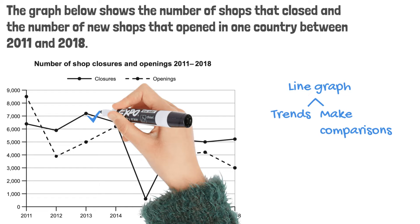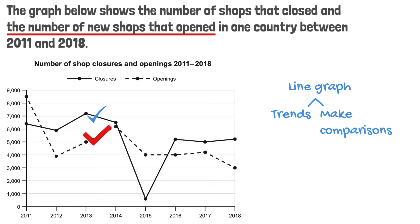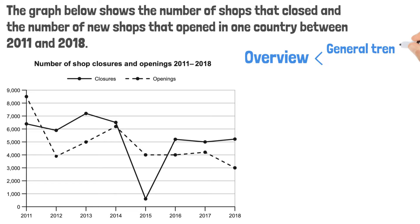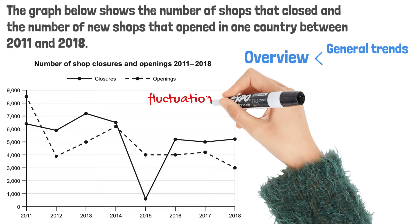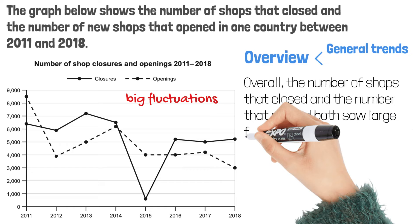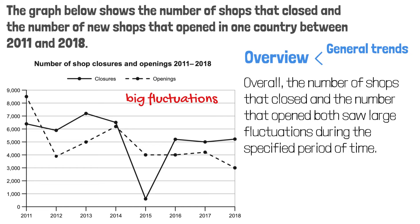This line shows the number of shops that opened, and this one shows the number of shops that closed. Let's start with the overview paragraph. For a line graph, of course, we will describe the general trends. Please don't say something like 'overall, they both declined.' I wouldn't call these downward trends. Obviously, they fluctuated, and the fluctuations are pretty big. So I will just say that overall, the number of shops that closed and the number that opened both saw large fluctuations during the specified period of time. Please note how I used the word 'both.'